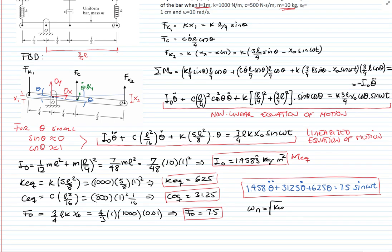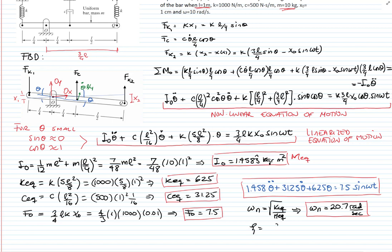The natural frequency is the square root of the equivalent spring constant divided by the mass moment of inertia. Plugging in the values gives a natural frequency of 20.7 rad/s. The damping ratio zeta is the equivalent damper constant divided by twice the square root of the equivalent spring constant times the mass moment of inertia, yielding zeta equals 0.51. This is an underdamped system.